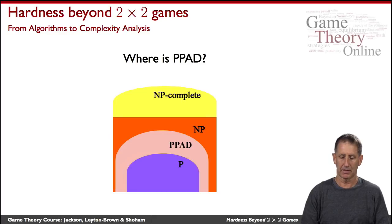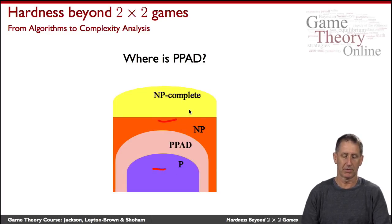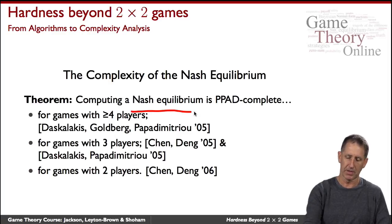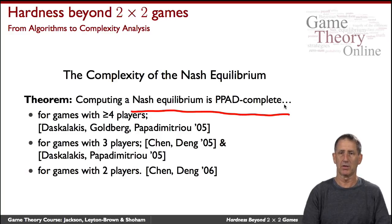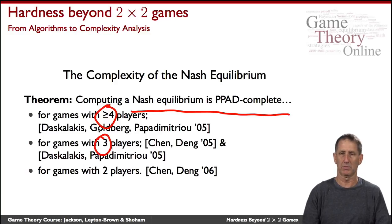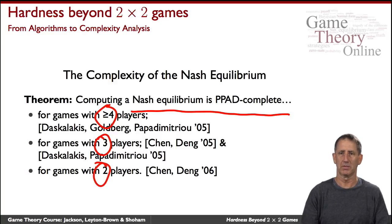We do know that PPAD lies someplace in between P and NP. What does that have to do with the problem of computing a Nash equilibrium? That's where the following theorems come in. It was originally shown that the problem of computing a Nash equilibrium is complete for PPAD — that is, it's the hardest among all problems in that class — initially proved for four players, then for games with three or more players, and finally in 2006 for all classes of games. So we widely believe that the problem is not polynomial, cannot prove it, but we do know where it resides within the complexity hierarchy.